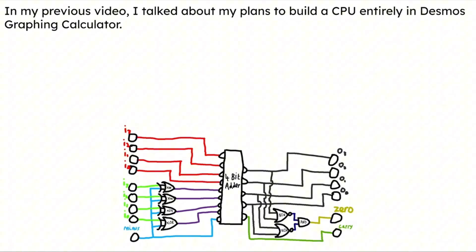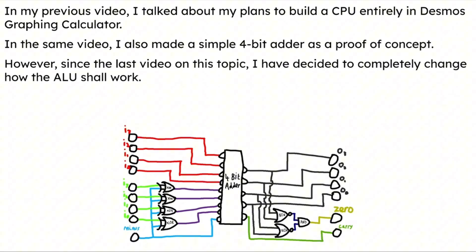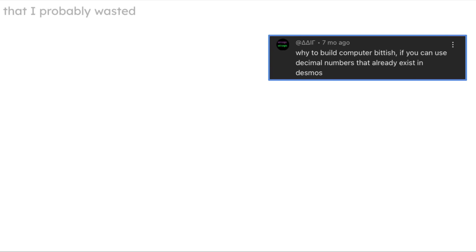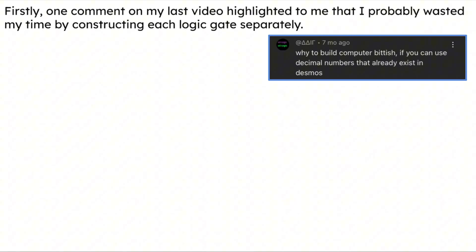In my previous video I talked about my plans to build a CPU entirely in Desmos graphing calculator. In the same video I also made a simple 4-bit adder as a proof of concept. However, since the last video on this topic I've decided to completely change how it shall work, so let's dive into that.